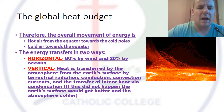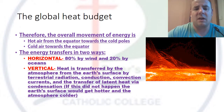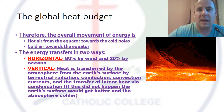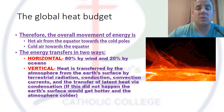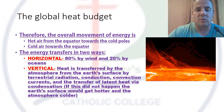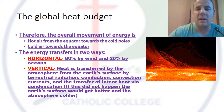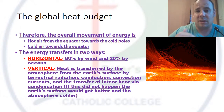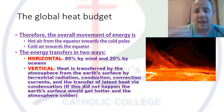Overall, the movement of energy is that hot air from the equator goes towards the poles, and cold air goes the opposite way towards the equator. Energy transfers in two main ways: horizontally — 80 percent by wind and 20 percent by oceans. That's why I showed you that image of wind and ocean currents, because horizontally along the surface of the Earth is where we get that transfer of energy.